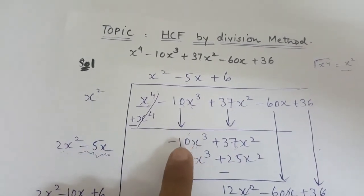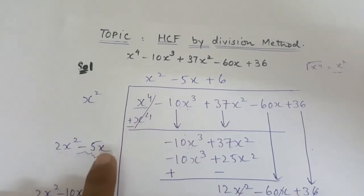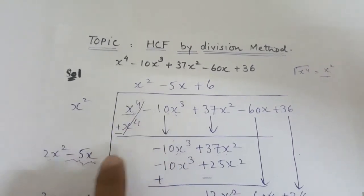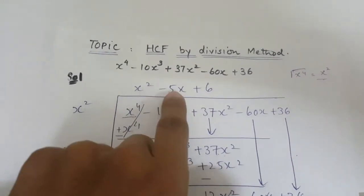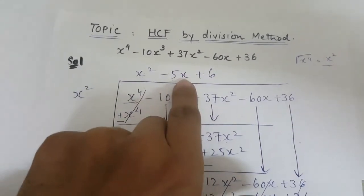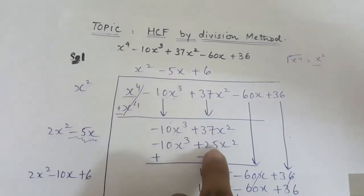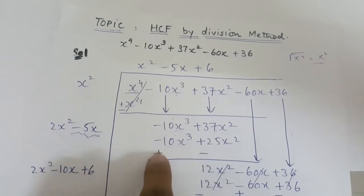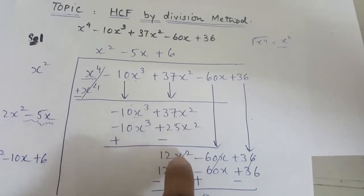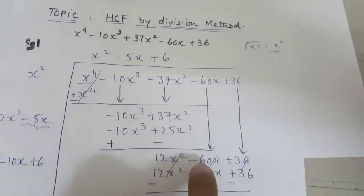We write -5x two times, once here and once here. Then we find the products: 2x² multiplied by -5x gives -10x³, and -5x multiplied by -5x gives +25x². After changing the sign we are left with 12x², which is 37x² - 25x². The remaining two pairs, -60x + 36, are written alongside.